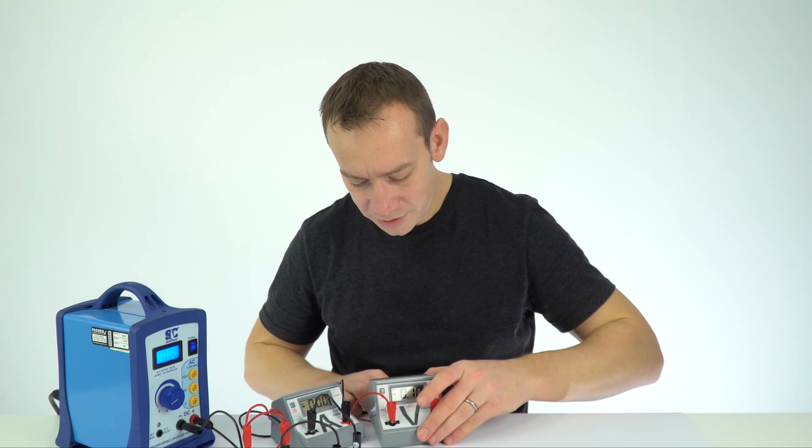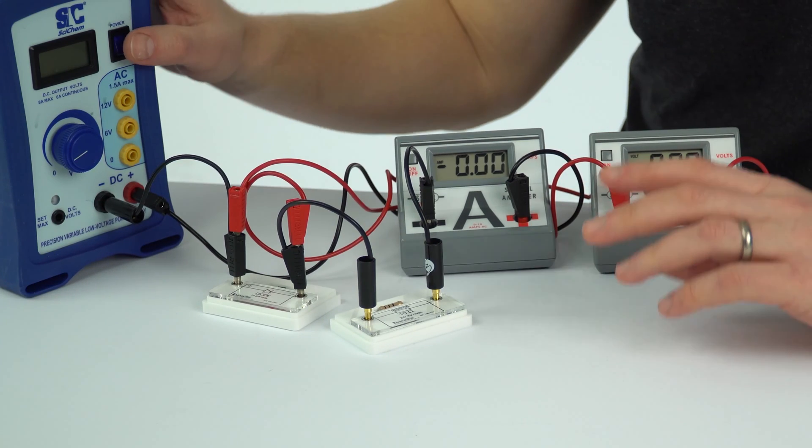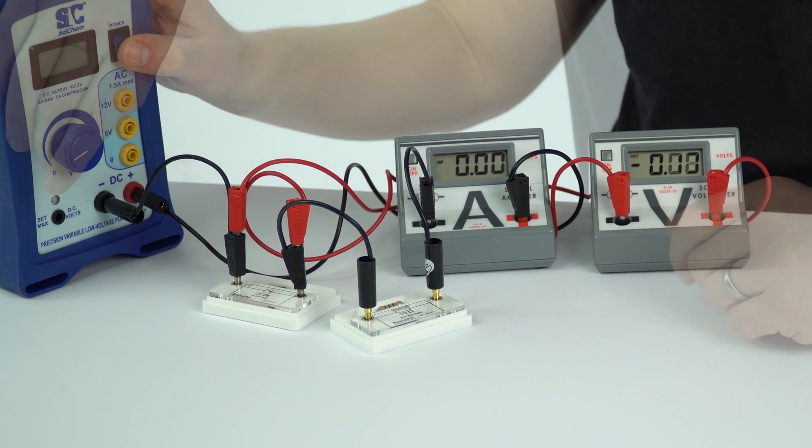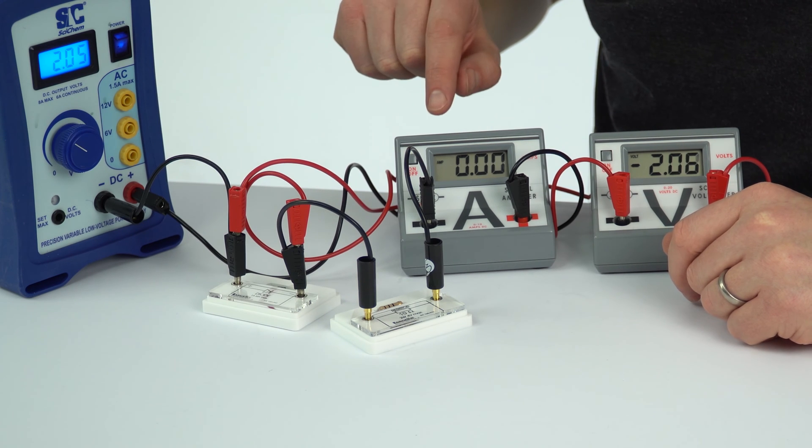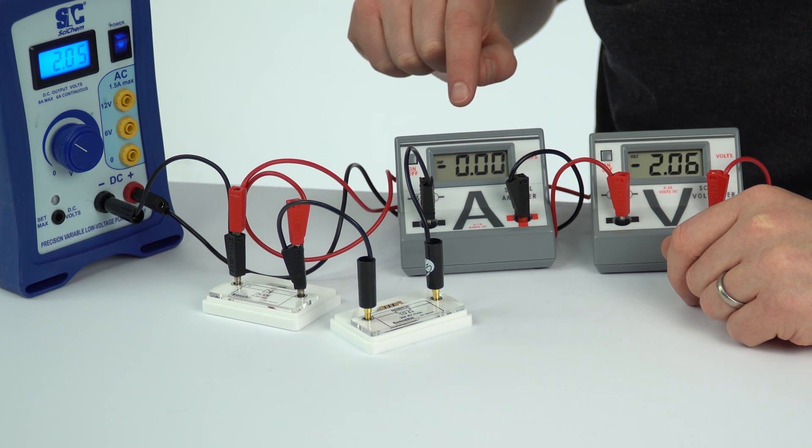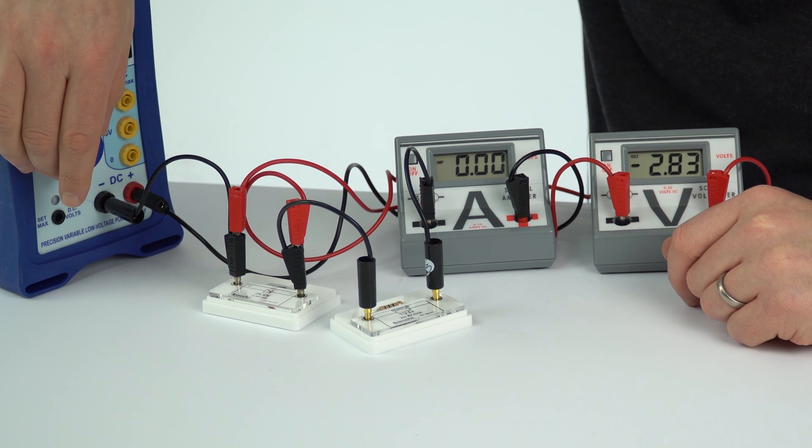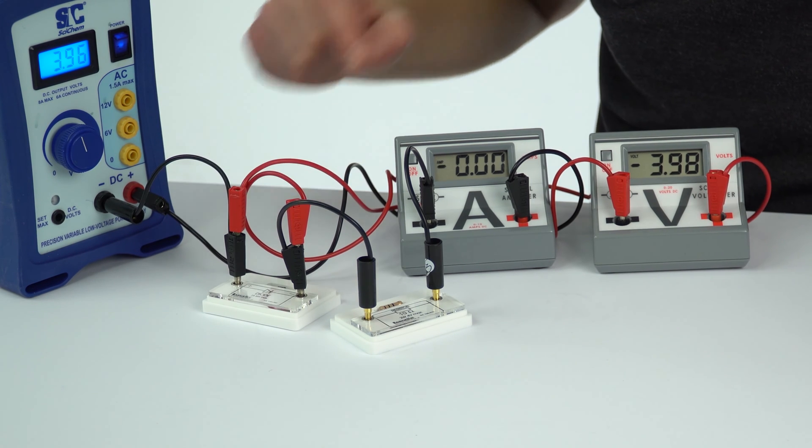I think now we're ready to take some data. Initially, with the power supply turned off, we have zero volts and zero current. When we've got negative two volts or a value quite close to that, we have a current of zero. I'm now going to do the same, going to negative four and zero.